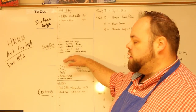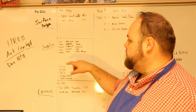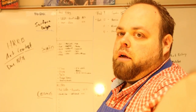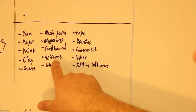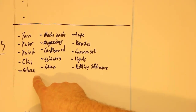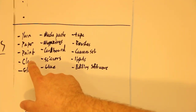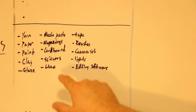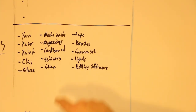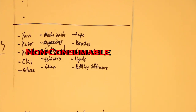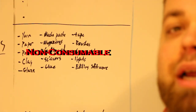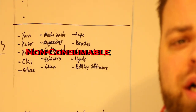On my supply list I've got items for my surface design class: scissors, glue, glaze, and clay. Of those, one is a non-consumable item. I'm going to use up clay, glaze, and glue — but my scissors are going to stay the same for years to come. Because scissors are non-consumable, they can be funded differently.